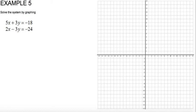Example 5. Solve the system by graphing. To solve the system by graphing, we have to get both of the equations in slope-intercept form first, and then graph them, and find the intersection point, because the intersection point will be the solution to the system.